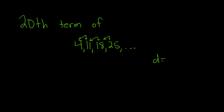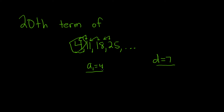The notation is little d. In this case, little d is equal to 7. The first term is a sub 1, and that's equal to 4 in this case. Using this information, we can actually find the 20th term.